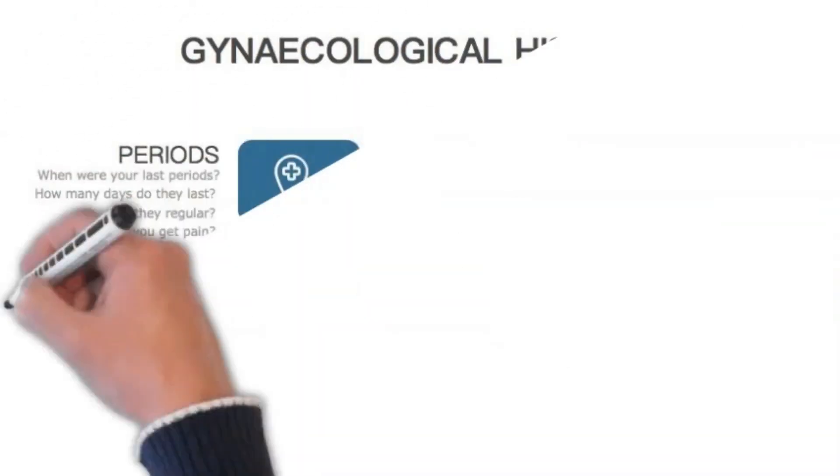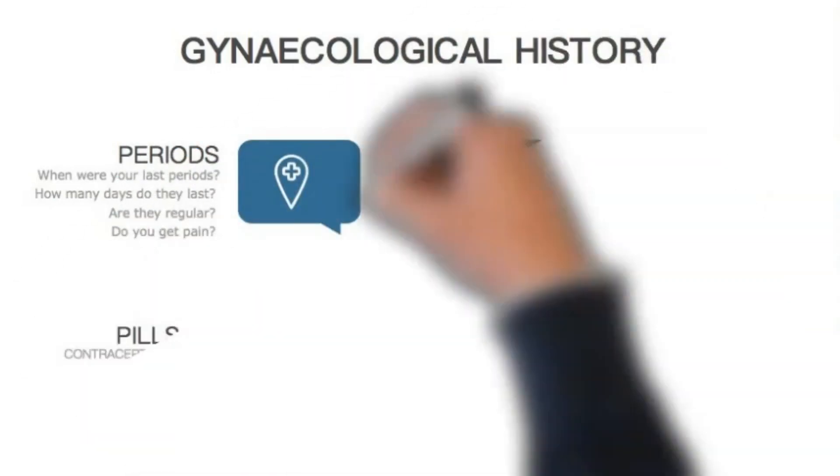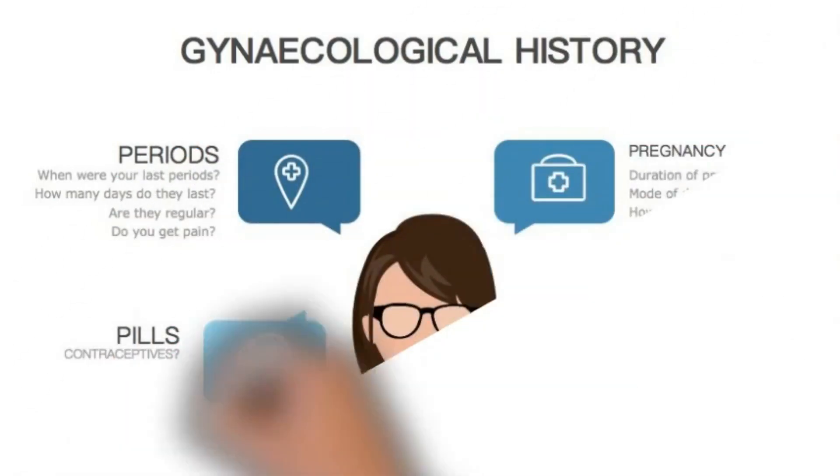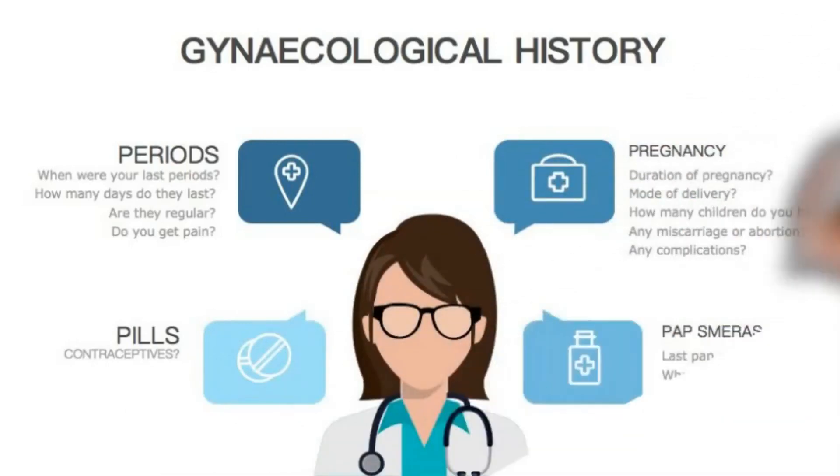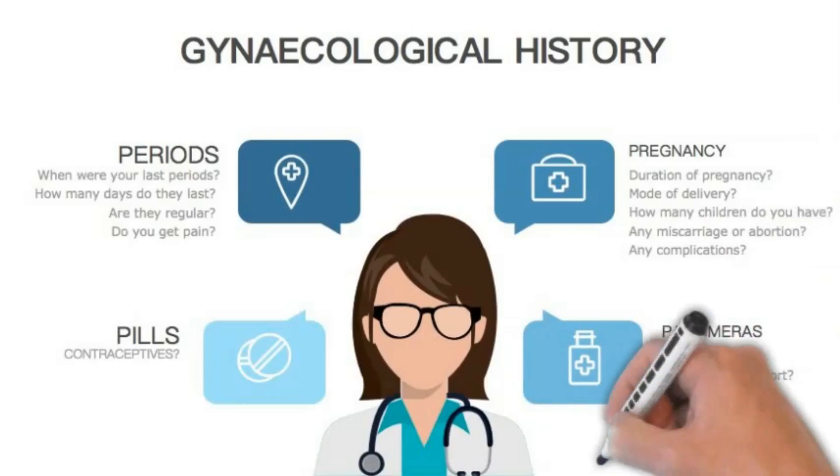If the patient is a woman, ask about 4P. Period. LMP: When were your last periods? If more than 4 weeks, then she might be pregnant. How many days did they last? Are they irregular? Do you get pain? Are you on pills? Oral contraceptive pills are a risk factor for pulmonary embolism.